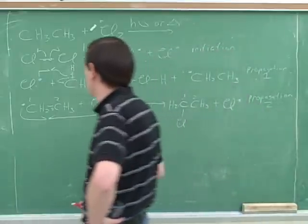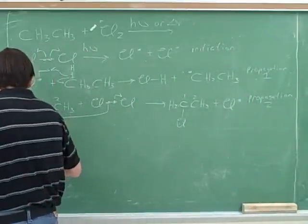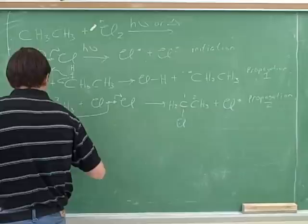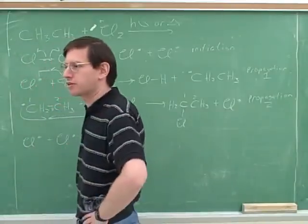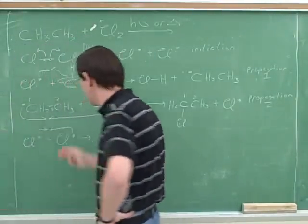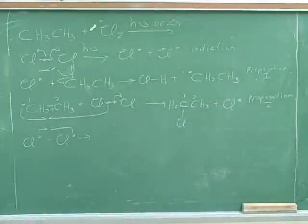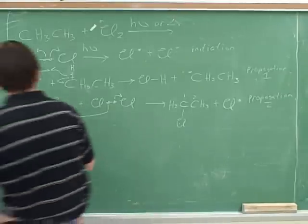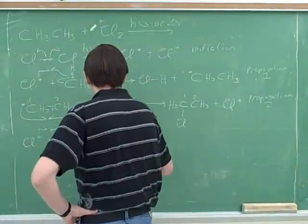So there's a bunch of ways this could terminate. For example, one of the chlorines could simply meet up with another chlorine. Let's draw the product from that step. Great. You should actually draw the heads of the arrows right next to each other, just because that's the conventional way to draw it.